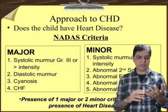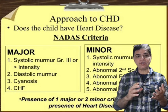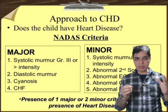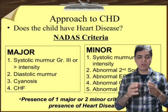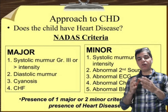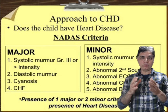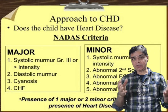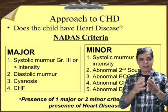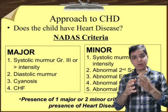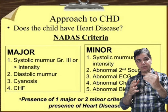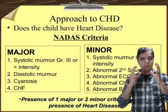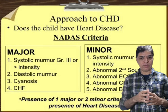The first is the presence of a systolic murmur which is grade 3 or more. A child who has a systolic murmur — it could either be a pansystolic murmur or an ejection systolic murmur. Murmurs are graded from 1 to 6, where 1 is barely audible and 6 is a murmur which can be heard even without a stethoscope. Grade 3 is a moderately audible murmur without a thrill; grade 4 has a thrill. If grade 3 or above is present, that satisfies one of the major criteria of NADA.